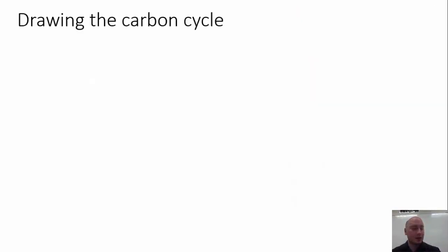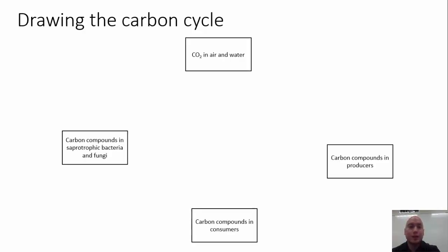Next is drawing the carbon cycle, which you have all been waiting for. The first step is to draw the four carbon sinks. These are methods of storing carbon in ecosystems. You have carbon dioxide in the air and water, just as a gas. You have carbon compounds in producers, carbon compounds in consumers, and carbon compounds in saprotrophic bacteria and fungi.